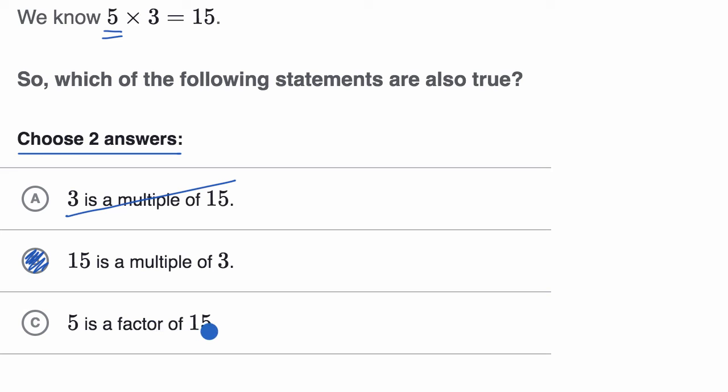Five is a factor of 15. A factor, factors of a number are numbers that you can multiply together to get that number. So five is a factor of 15, and three is a factor of 15, because five times three is 15. So this one is also true.